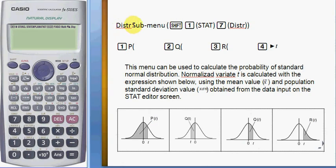This is the distribution sub-menu in the statistic function. So we have P of t is the area of less than, and Q of t is the area of the normal curve between 0 and t. It doesn't matter if the value of t is positive or negative. And R is the area of the probability for z greater than t.